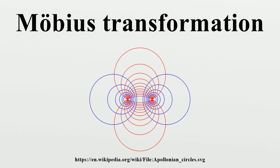Möbius transformations are defined on the extended complex plane. Stereographic projection identifies this with the sphere, which is then called the Riemann sphere. Alternatively, it can be thought of as the complex projective line. The Möbius transformations are exactly the bijective conformal maps from the Riemann sphere to itself, i.e., the automorphisms of the Riemann sphere as a complex manifold, or alternatively, the automorphisms as an algebraic variety.